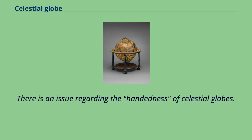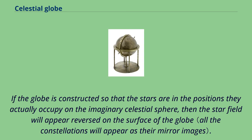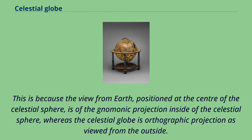There is an issue regarding the handedness of celestial globes. If the globe is constructed so that the stars are in the positions they actually occupy on the imaginary celestial sphere, then the star field will appear reversed on the surface of the globe. This is because the view from Earth, positioned at the center of the celestial sphere, is of the gnomonic projection inside of the celestial sphere, whereas the celestial globe is an orthographic projection as viewed from the outside.